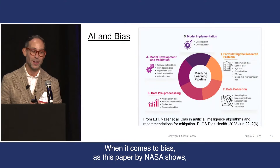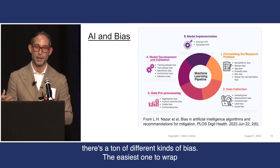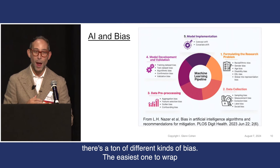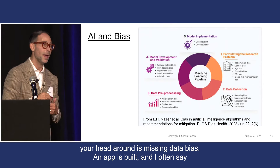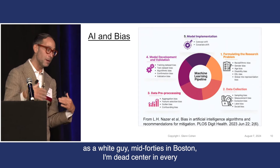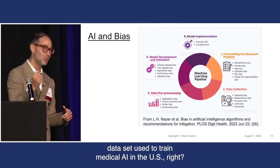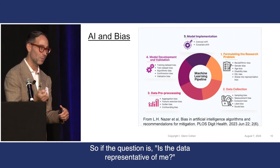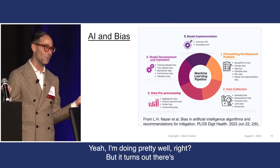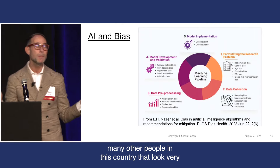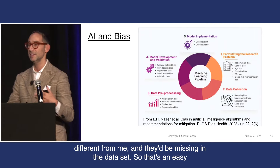When it comes to bias, as this paper by NASA shows, there's a ton of different kinds of bias. The easiest one to wrap your head around is missing data bias. An app is built, and I often say, as a white guy, mid-40s in Boston, I'm dead center in every data set used to train medical AI in the U.S. But it turns out there are many other people in this country that look very different from me, and they've been missing in the data set.